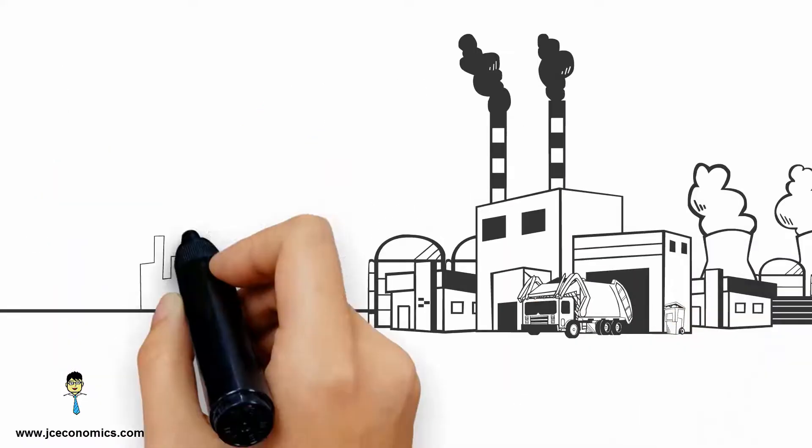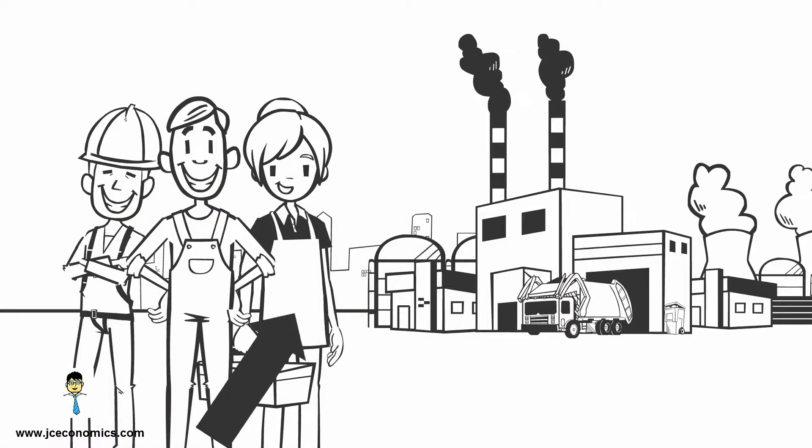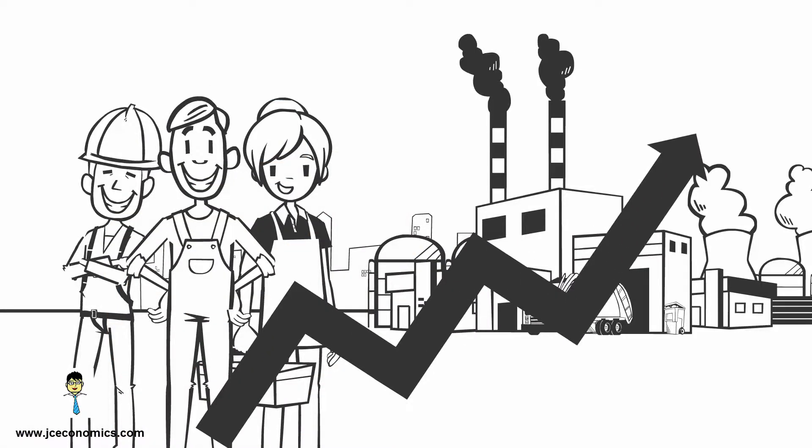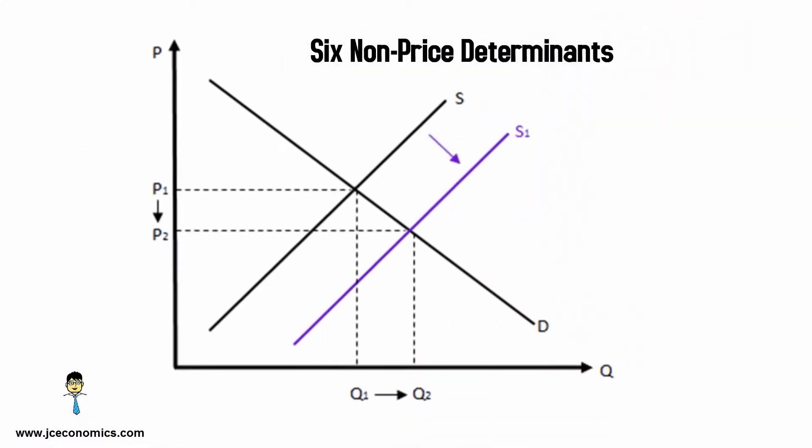Last but not least, the number of sellers in an industry influences the level of supply available. A large number of sellers would increase the total supply. In conclusion, these six factors determine the level of supply.